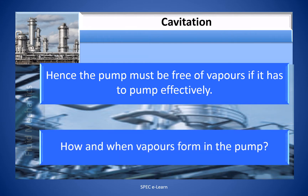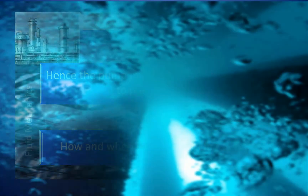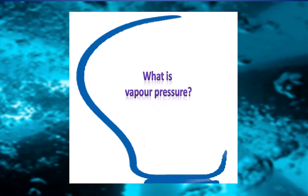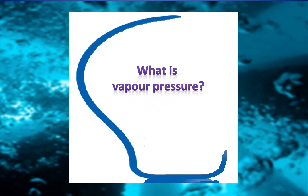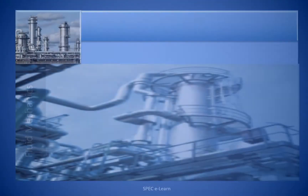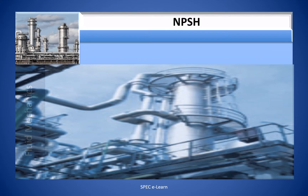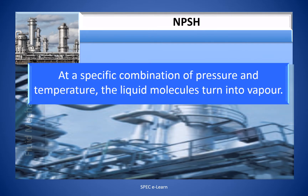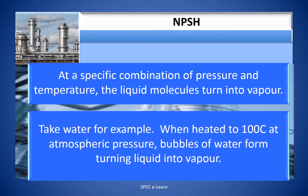How and when do vapors form in the pump? To answer that, you must recall one important property of a liquid when discussing pump operation: vapor pressure. At a specific combination of pressure and temperature, the liquid molecules turn into vapor. Take water for example — when heated to 100 degrees centigrade at atmospheric pressure, bubbles of water form, turning the liquid into vapor.